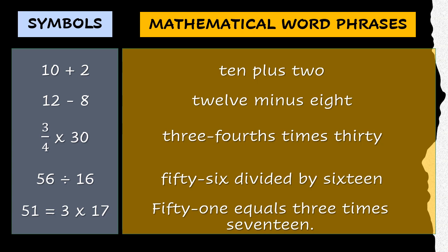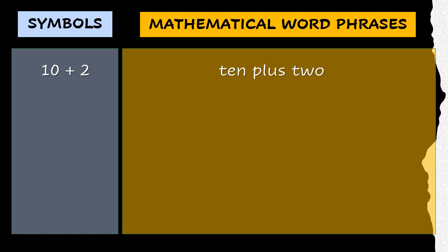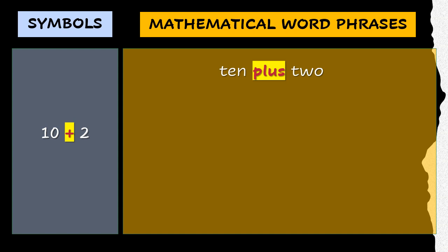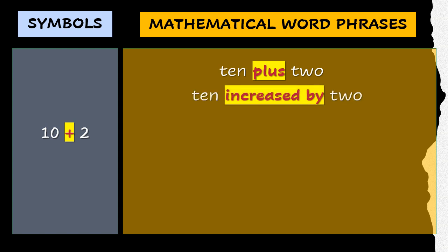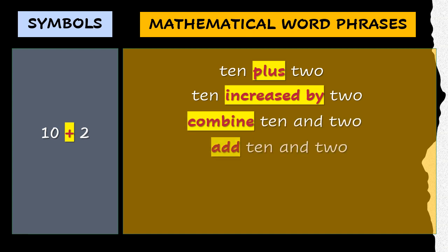To translate mathematical expressions and equations to word phrases and sentences, it is very important for us to be familiar with clue words or signal words. For addition, plus is the most obvious clue word. But aside from the word plus, there are many clue words that tell us addition should be done, like increased by, combined, and add. If you are using the word add, be careful of how you write the numbers in order. Here we have add 10 and 2, or we can say add 2 to 10. Notice how the numbers are switched? That is because of the word we use to connect the numbers.